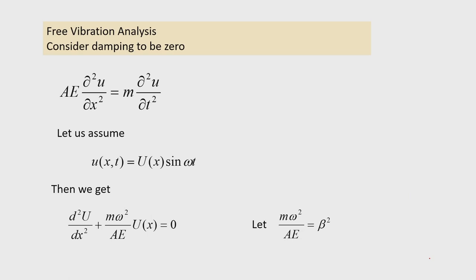Now let us do the modal analysis. Modal analysis is the same as free vibration analysis. We carry out the modal analysis considering damping to be zero, so the equation reduces to: AE·∂²u/∂x² = m·∂²u/∂t². We assume that the axial displacement u(x,t) is a product of a space function U(x) and a harmonic function sin(ωt), since free vibration is always harmonic. In the absence of damping there is no phase difference, so u(x,t) = U(x)·sin(ωt).